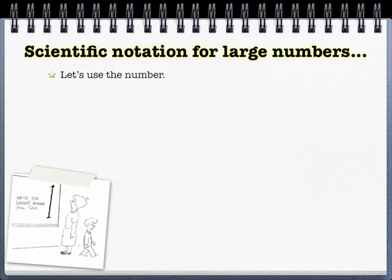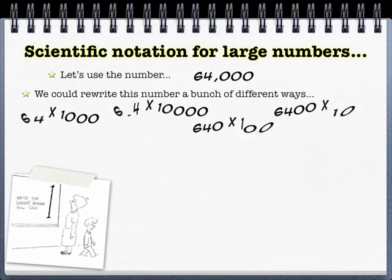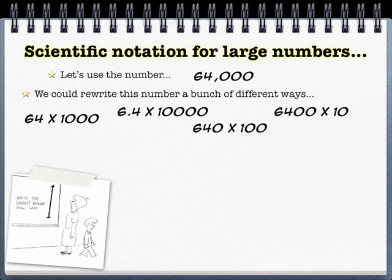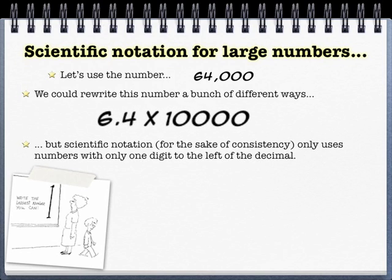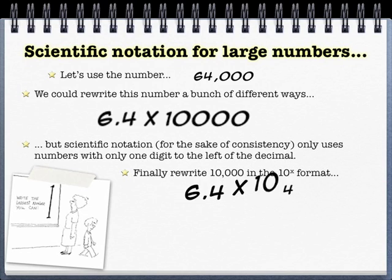Scientific notation for large numbers is a very simple idea. So let's take this number. The $64,000 question is, how do you write 64,000 in scientific notation? You could rewrite this number a bunch of different ways. And all these are valid ways. All these still equal 64,000 when you multiply them together. The trick to scientific notation is to pick the one number where there's only one digit to the left of the decimal. And the reason we do that is for just consistency, so that we all are using the same baseline. So in this case, 6.4 times 10,000 equals 64,000. And that's the start of scientific notation. All we need to do is clean up everything to the right of the multiplication sign.